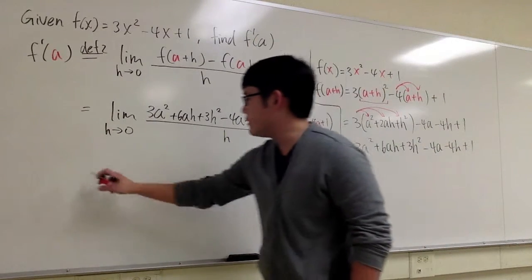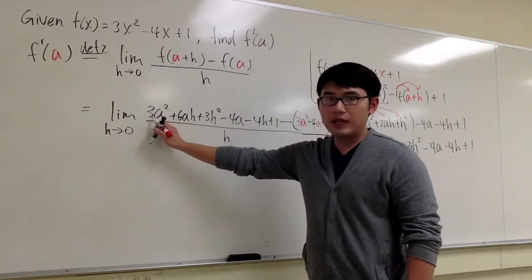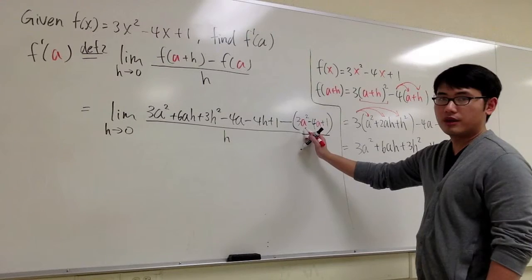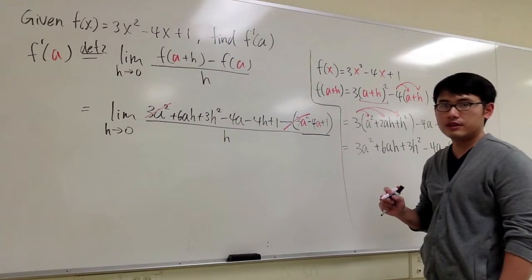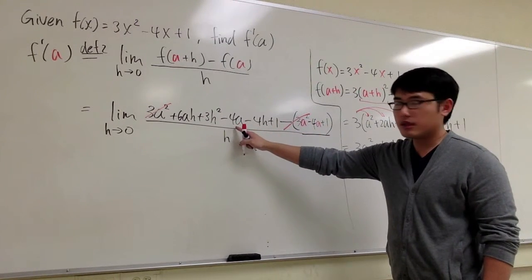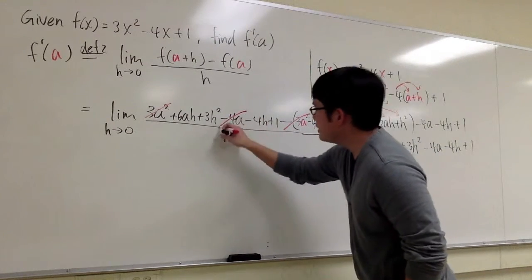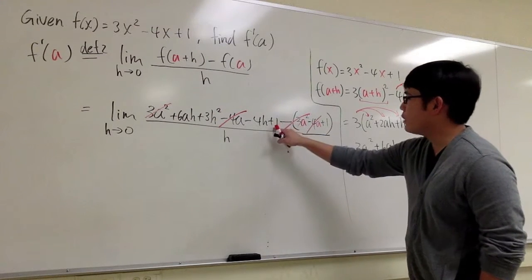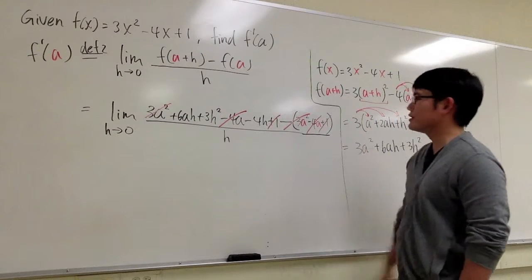And now let's see if there's anything that we can do, and there is a few things that we can do. Here we have 3a², and then we have a minus 3a², so this and that cancel each other out. And then we have negative 4a right here, this is the minus, minus 4a, so this 4a and that 4a, they also cancel each other out. I have a 1 right here, and a minus 1 right here, so the 1 also cancel each other out.